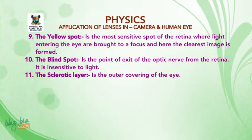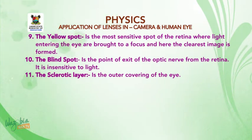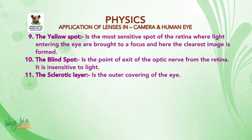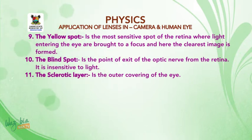Number ten: the blind spot. It is the point of exit of the optic nerve from the retina. It is insensitive to light. Number eleven: the sclerotic layer is the outer covering of the eye.